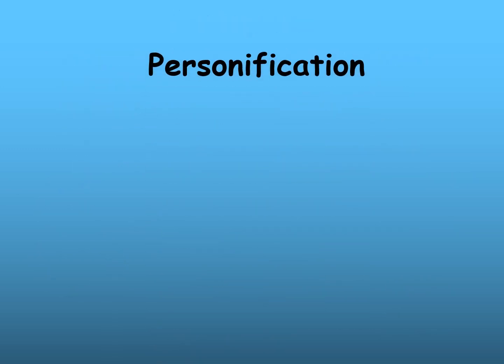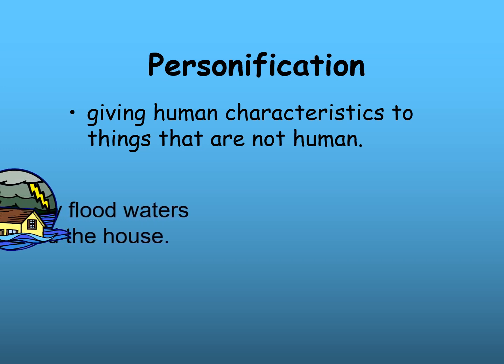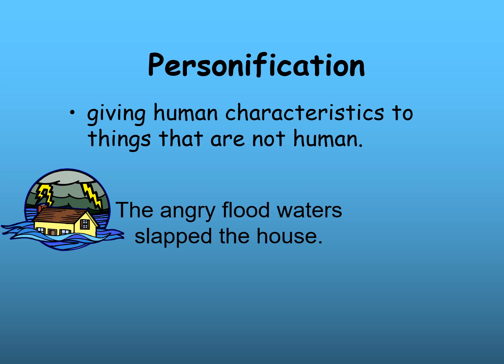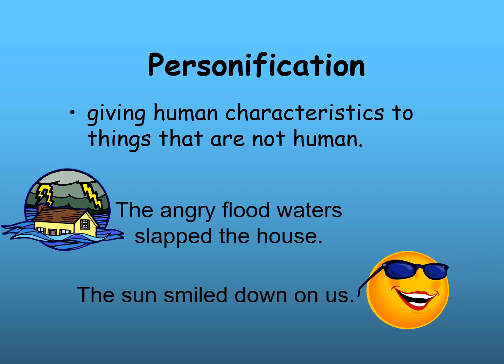Then we have personification — giving human characteristics to things that are not human. For example, 'the angry flood water slapped the house' — who can be angry? A person. So the poet personifies the flood as a person who is angry. Another example: 'The sun smiled down on us.' Can the sun smile? No, only a person can smile. So it's personification — the poet personifies the sun as a human who can smile.